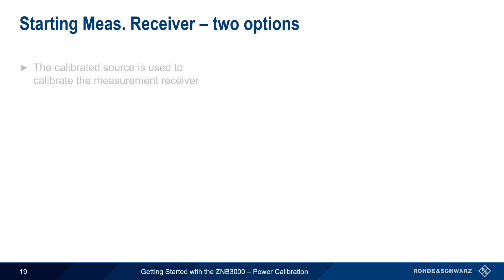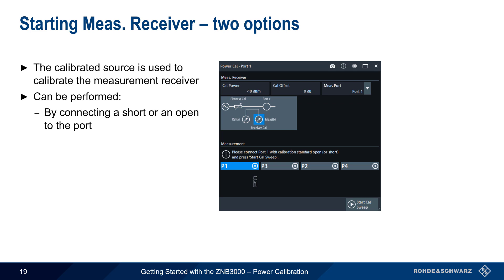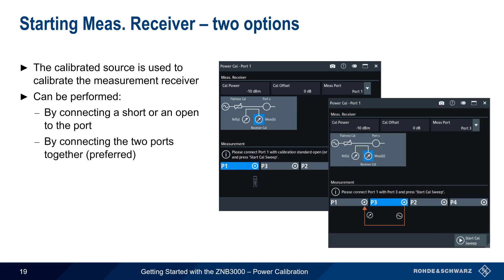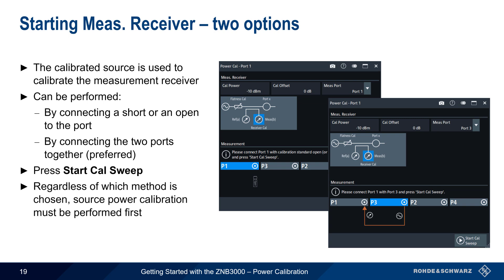A calibrated source from the reference receiver calibration can then be used to calibrate the measurement receiver. This calibration can be performed in two ways: either by connecting an open or short to the port, or by connecting the two ports together. The latter is preferred because it provides greater accuracy. Press Start Cal Sweep to begin. Regardless of which method is chosen, a source power calibration must be performed first.